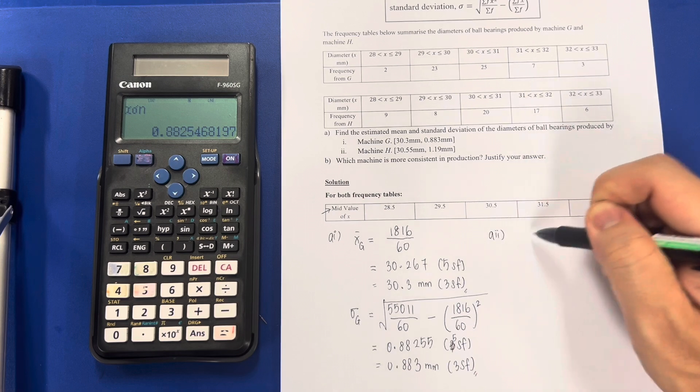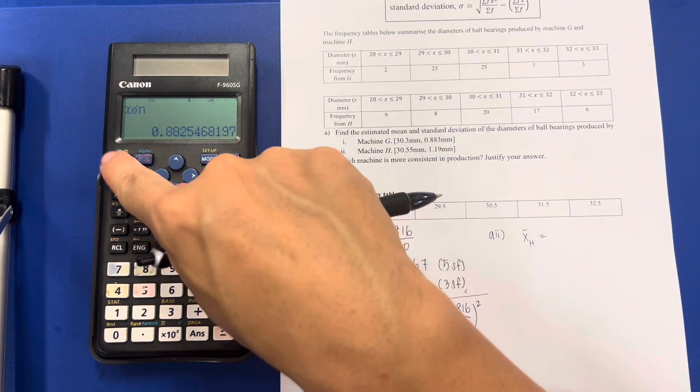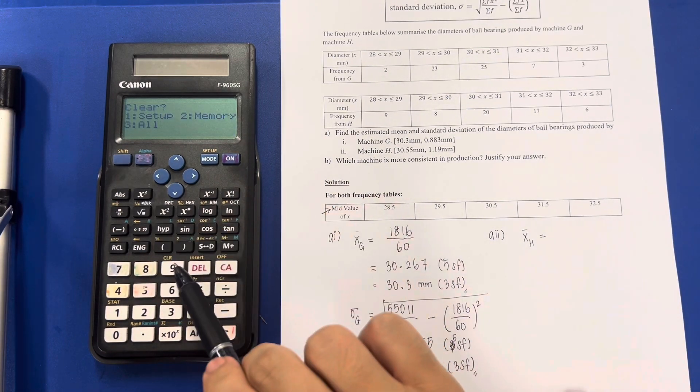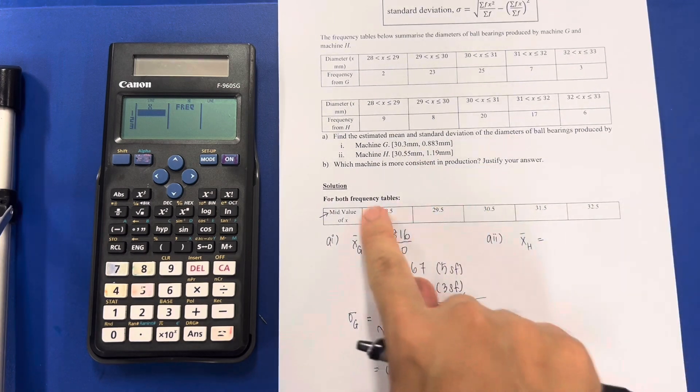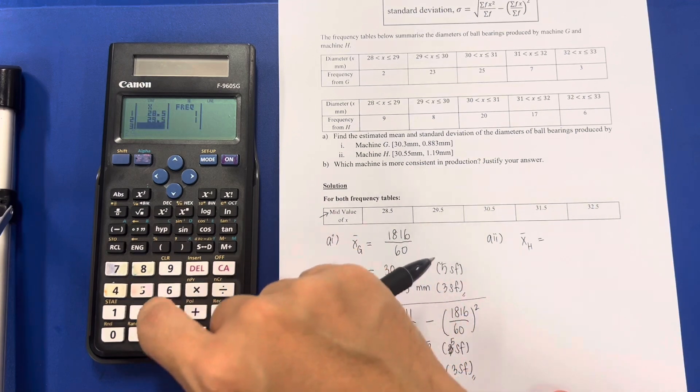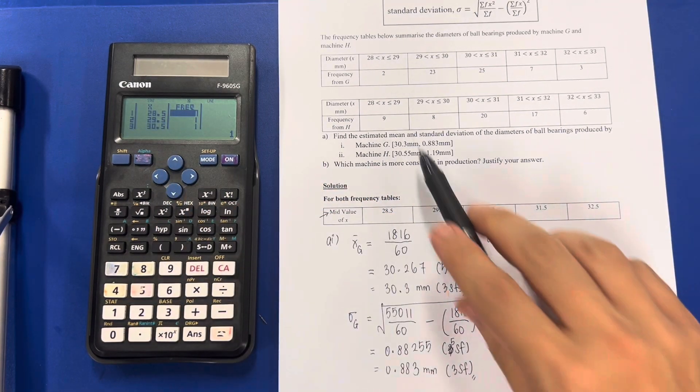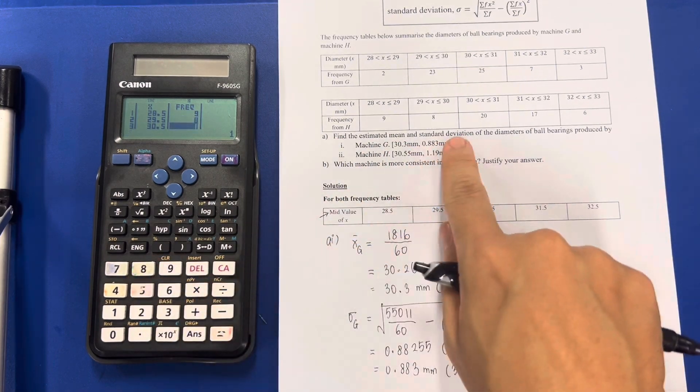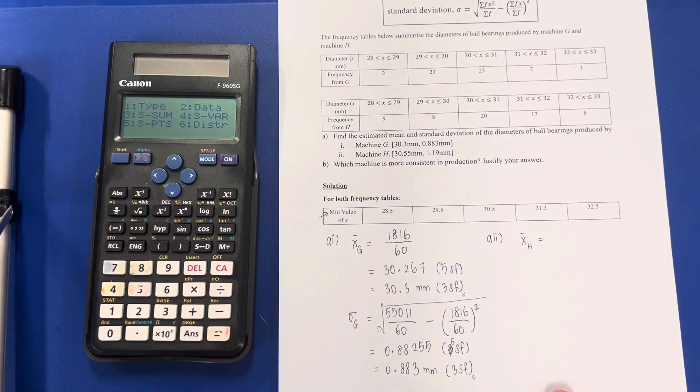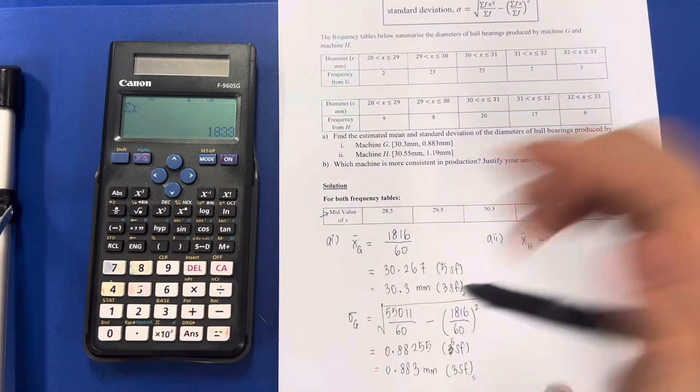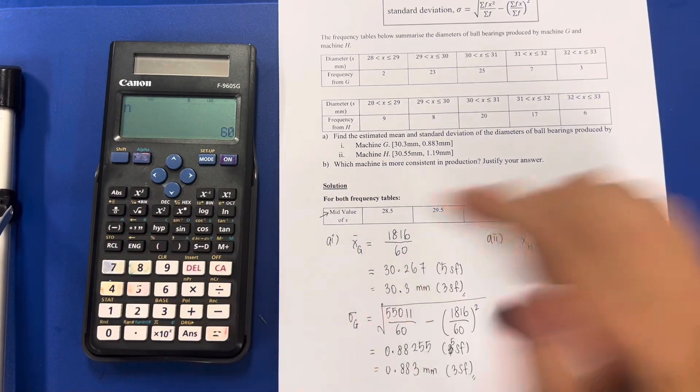I'm going to repeat this for the data for machine H. Okay, so now I'm going to clear my data. Shift, shift, shift, shift, nine, number 2, clear it, yes. Mode 2, 1 again. Same mid value, so 28.5, 29.5, 30.5, 31.5, and 32.5. Frequency is different though, so for H will be 9, 8, 20, 17, and 6. Data key in, repeat the same thing. Sum, so it will be 1833. Shift 1 again, this time is 4 and 1, oh also have 60.